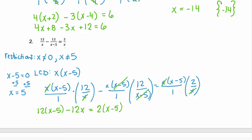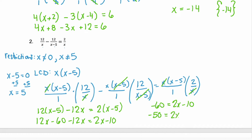Distribute through the parentheses: 12x minus 60 minus 12x equals 2x minus 10. Combine like terms on the left and we get negative 60 equals 2x minus 10. Add 10 to both sides and we get negative 50 equals 2x. Divide by 2 and you get x equals negative 25. Since x equals negative 25 is not one of our restrictions, it is the solution.